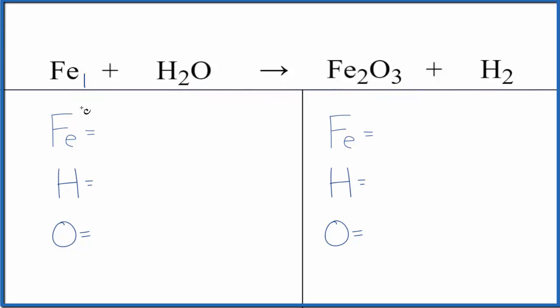We have one iron, and we have two hydrogens, one oxygen. Product side, we have two irons, two hydrogens, and then three oxygen atoms.